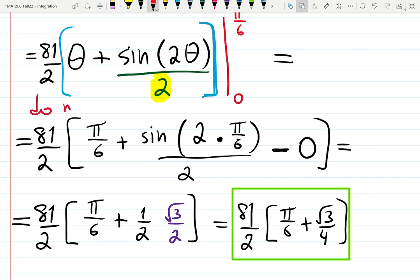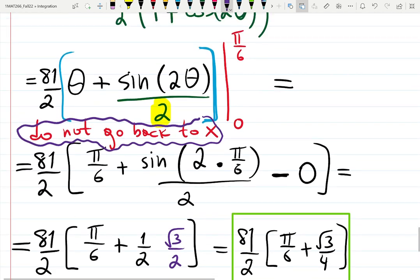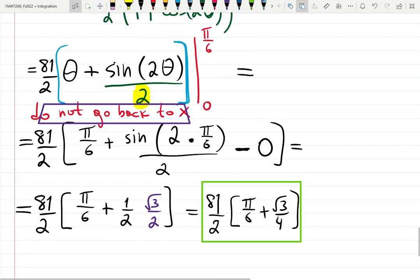Do not go back to x because it's a definite integral and you successfully changed limits of integration. So you can just plug π/6 and 0, which is an angle. Did you notice it was not 9/3, which is length - it was actually 0 and π/6, an angle.